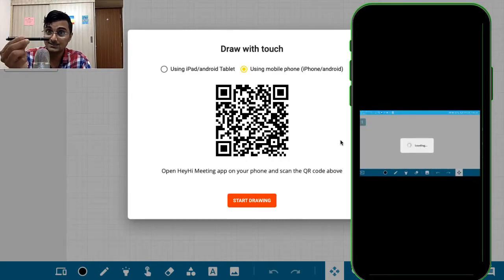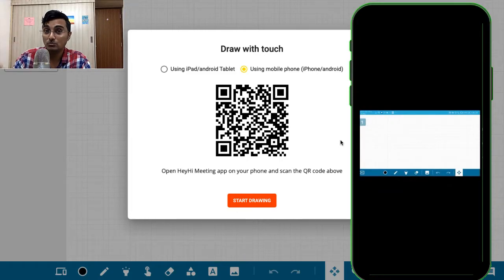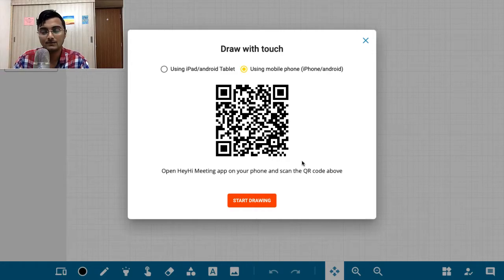Now using this stylus pen, you'll be able to use your mobile phone like a pen tablet and start drawing on it, and students will be able to see your drawings on the whiteboard from your laptop. I'll show you how to use the stylus pen to start drawing on your mobile phone.